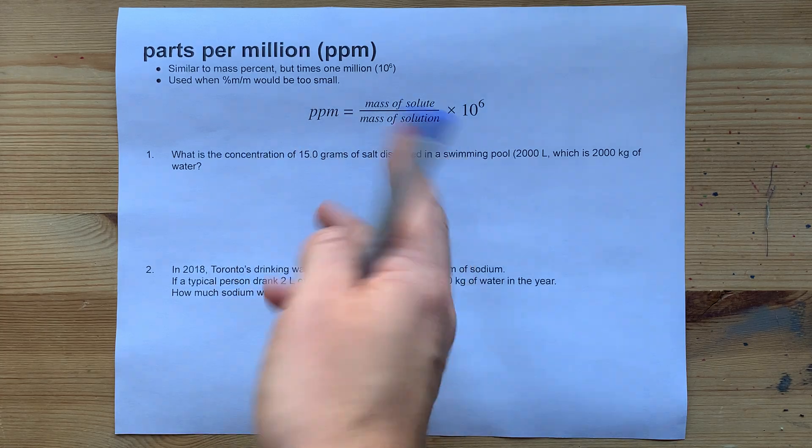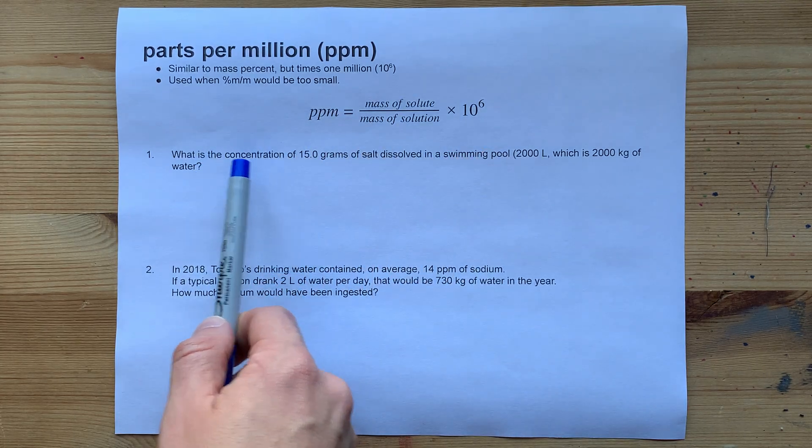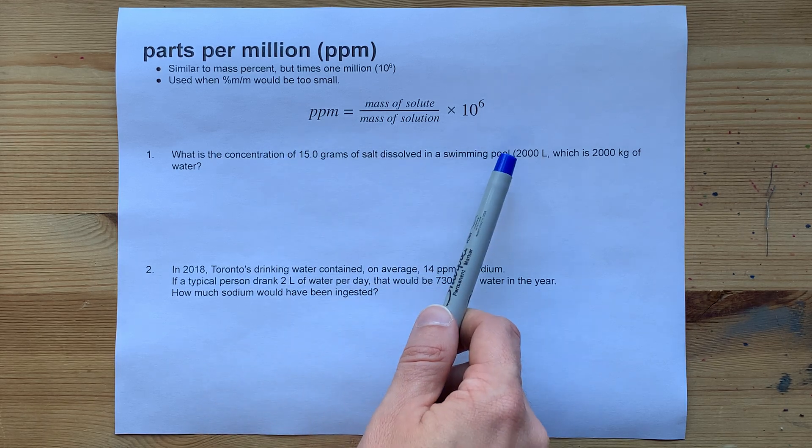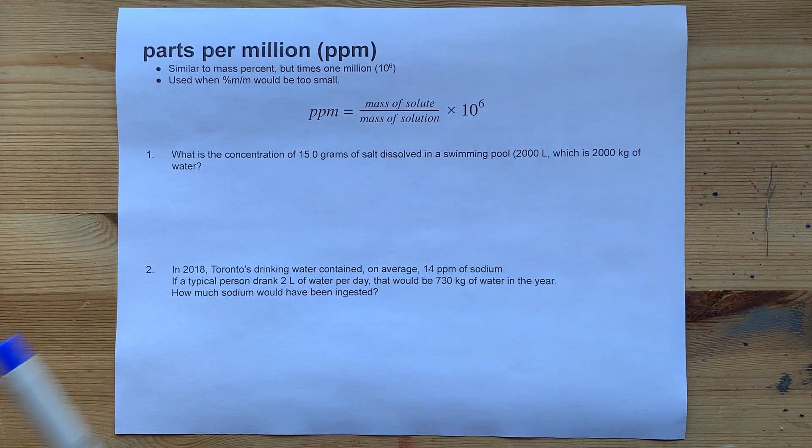That will give you a new unit called parts per million. What is the concentration if you drop 15 grams of salt into a 2,000 liter swimming pool? That's 2,000 kilograms of water.